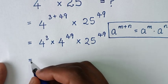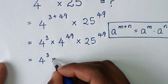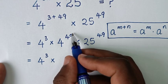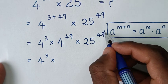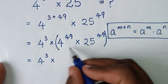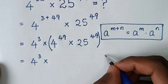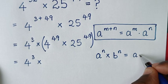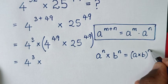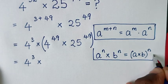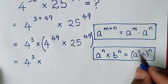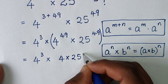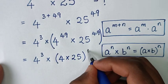Then in the next step, it will be equal to: 4 power of 3, then times — from here, 4 power of 49 times 25 power of 49 is a multiplication of exponents with the same power of 49. This is in the exponential form a power of n times b power of n equals (a times b) bracket power of n. So we'll apply this form: 4 times 25, bracket to the same power of 49.